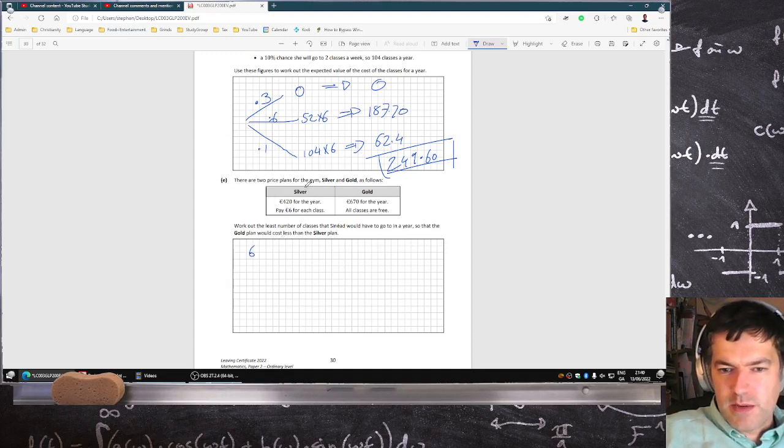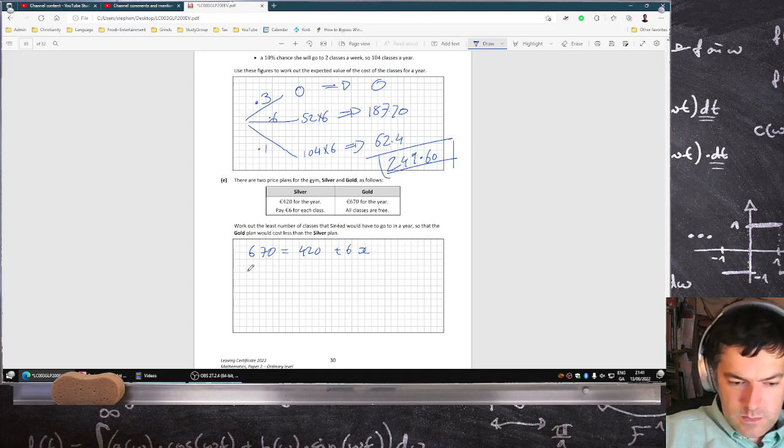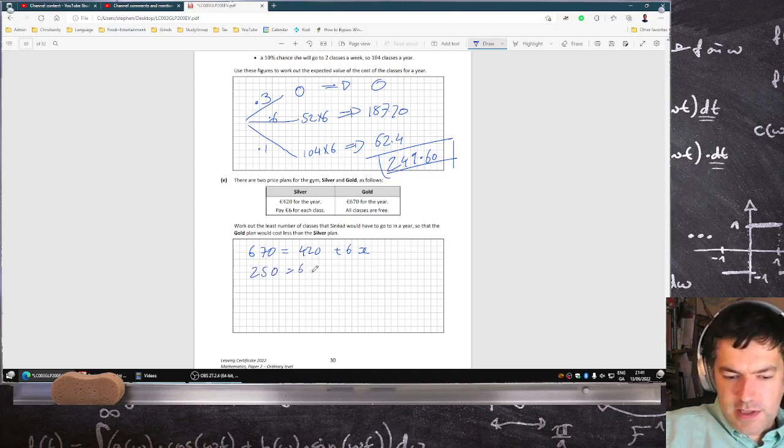Okay, so €6—when would the silver plan work out to be €670? So when would you get €670? So €420 plus €6 times the number of classes.